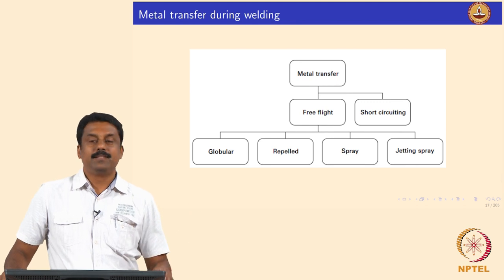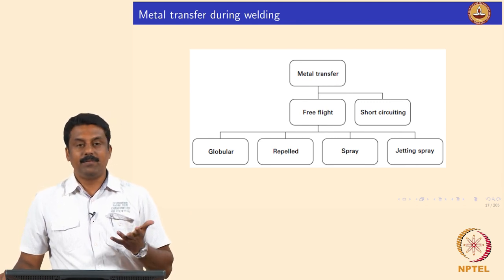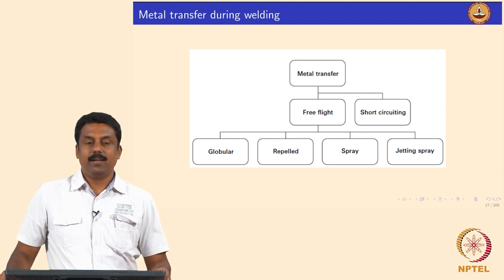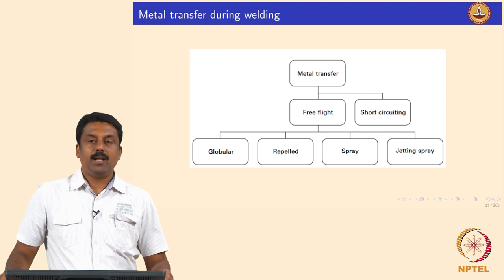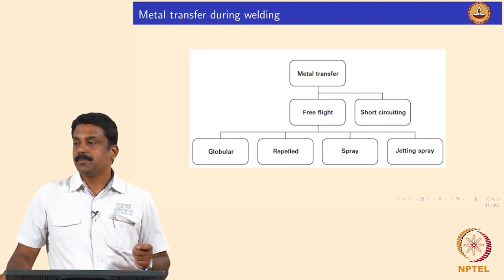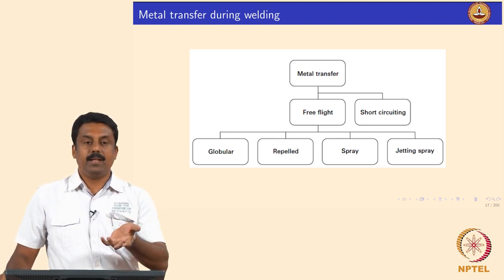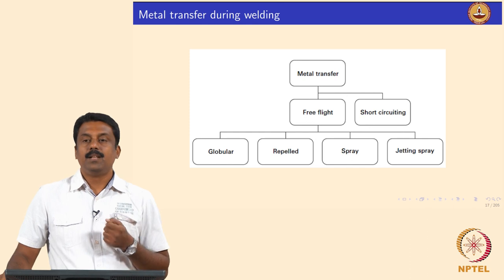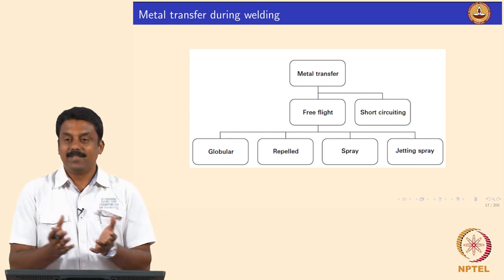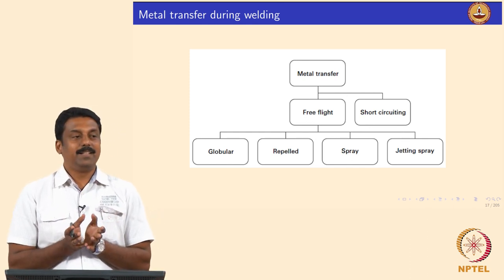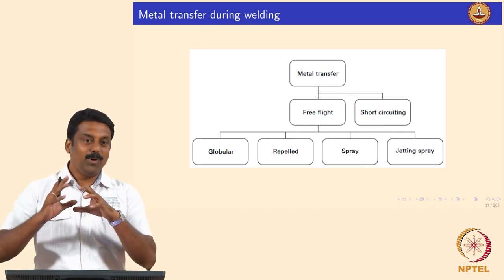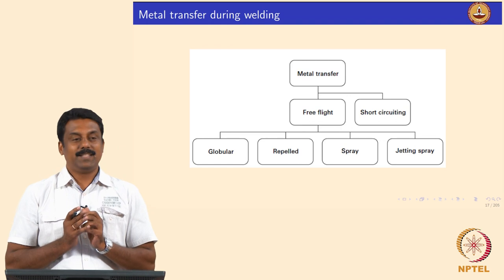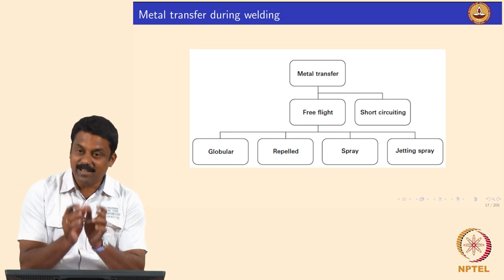The melting rate is the reason. For a given current I, you melt at a fixed rate, but if you change the current you also change the melting rate. So you are allowed to transfer more — the melting rate is also increasing, you are creating more volume of liquid metal that has to be transferred.